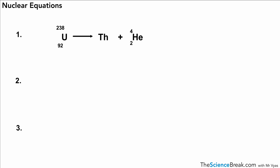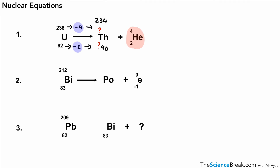Let's use this in some practice equations. For the first one, we need to figure out the atomic mass and atomic number for thorium (Th). We know it's alpha decay because there's an alpha particle at the end. For the mass number we subtract 4, and for the atomic number it's minus two because we have two fewer protons, so that gives us 90. That's the answer for thorium.